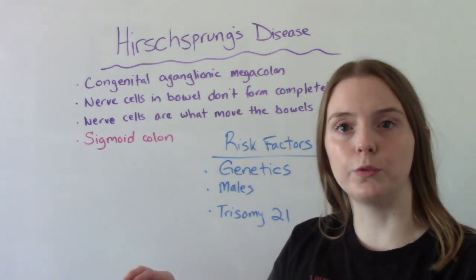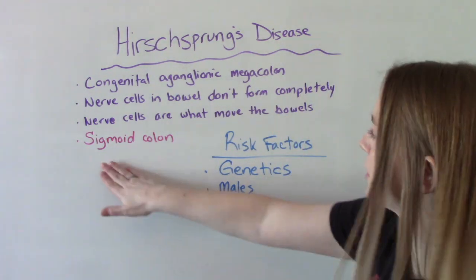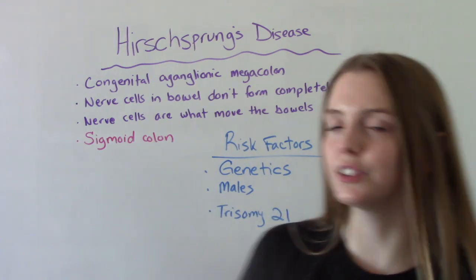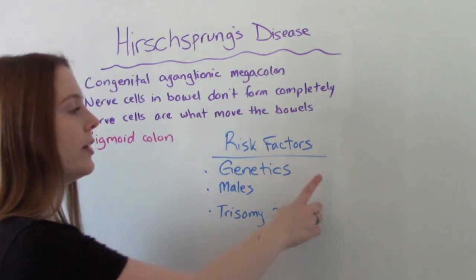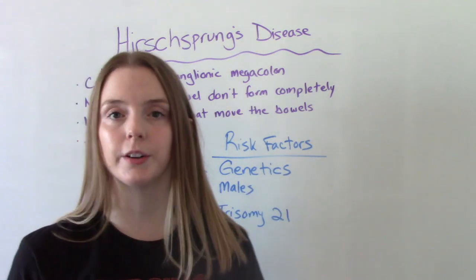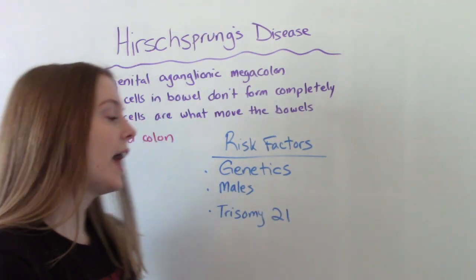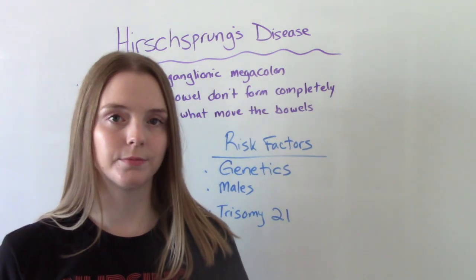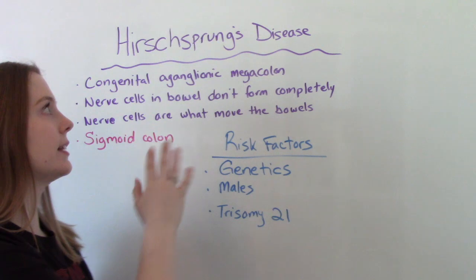So the stool is not being moved through. This specifically affects the sigmoid portion of the colon. Some risk factors — there's not a ton of them — but it's usually associated with a genetic component, so a family history of it, being of male gender, and trisomy 21, also known as Down syndrome. These are the populations more likely to get this illness.